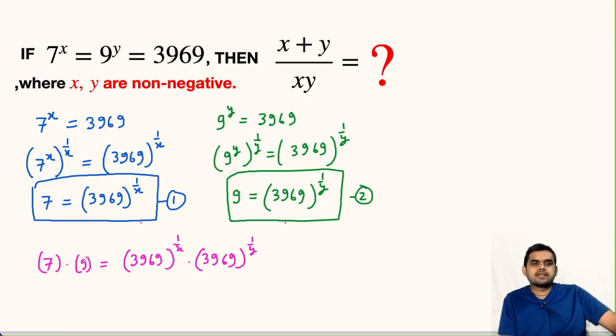So this will be 63 = 3969^(1/x + 1/y). This can be written as 3969 whole power 1/x plus 1/y.